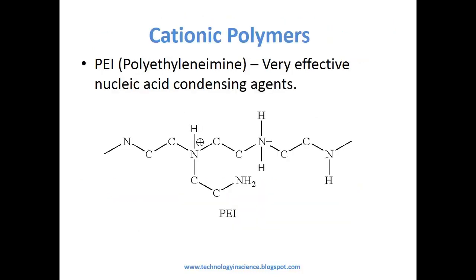Cationic polymer mediated transfection. Cationic polymers differ from cationic lipids as they do not have a hydrophobic moiety. Cationic polymers can more efficiently condense DNA. There are three different types of cationic polymers used for transfection: linear, branched, and spherical. Cationic polymers include PEI (polyethylenimine) and dendrimers.